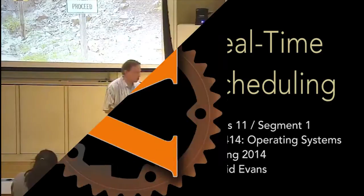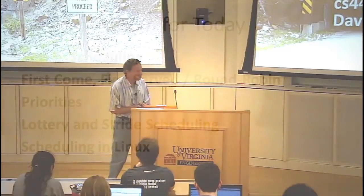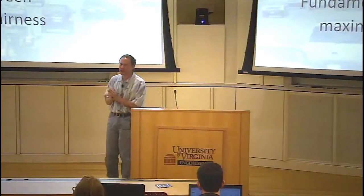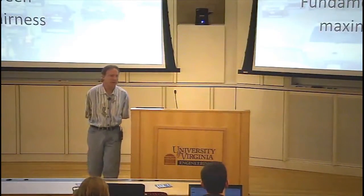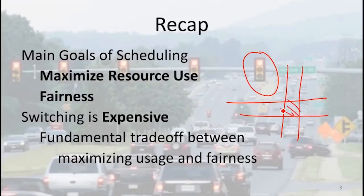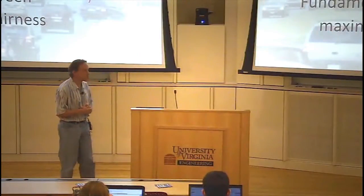We introduced scheduling last class, so the main topic today will be to look at smarter ways to do scheduling and some of the interesting issues that you get into in scheduling computing systems. We'll look at how priorities work and how that affects scheduling. To recap: scheduling is always about sharing some limited resource. With a traffic light, the limited resource is the intersection that can only have one direction of traffic using it at a time. With a computer, the limited resource is the core that can only execute one stream of instructions at a time.